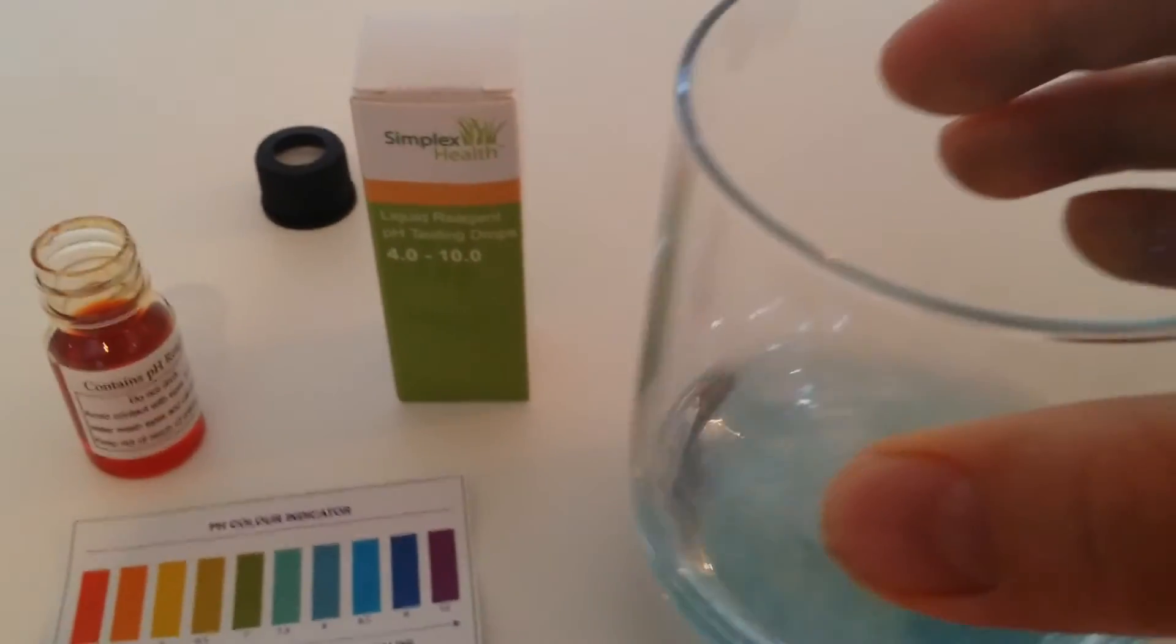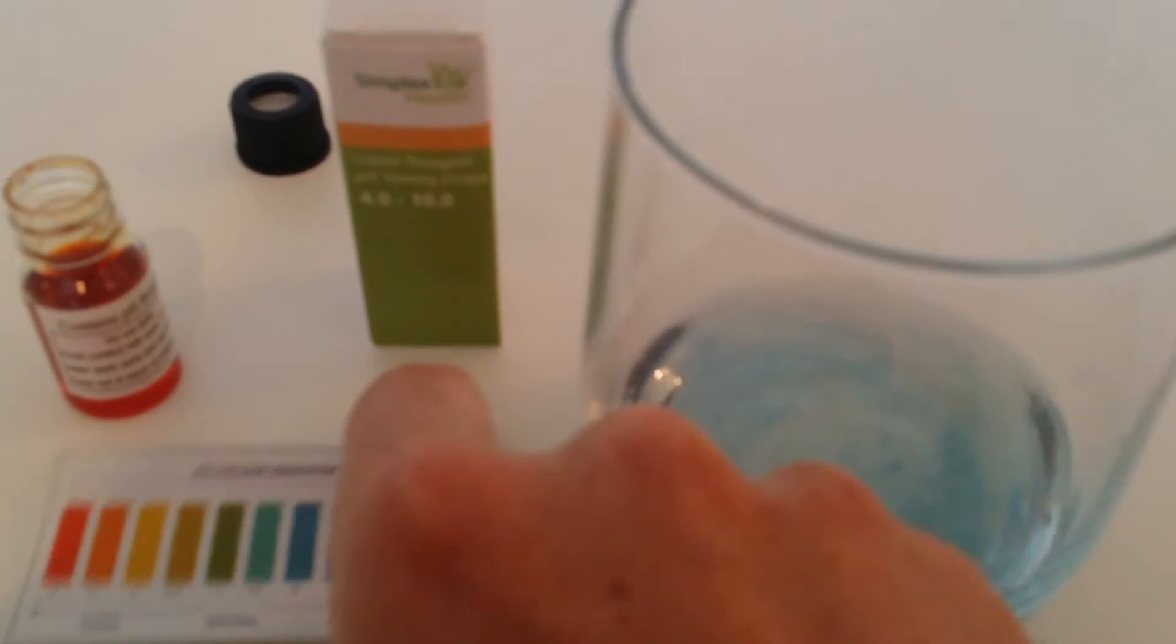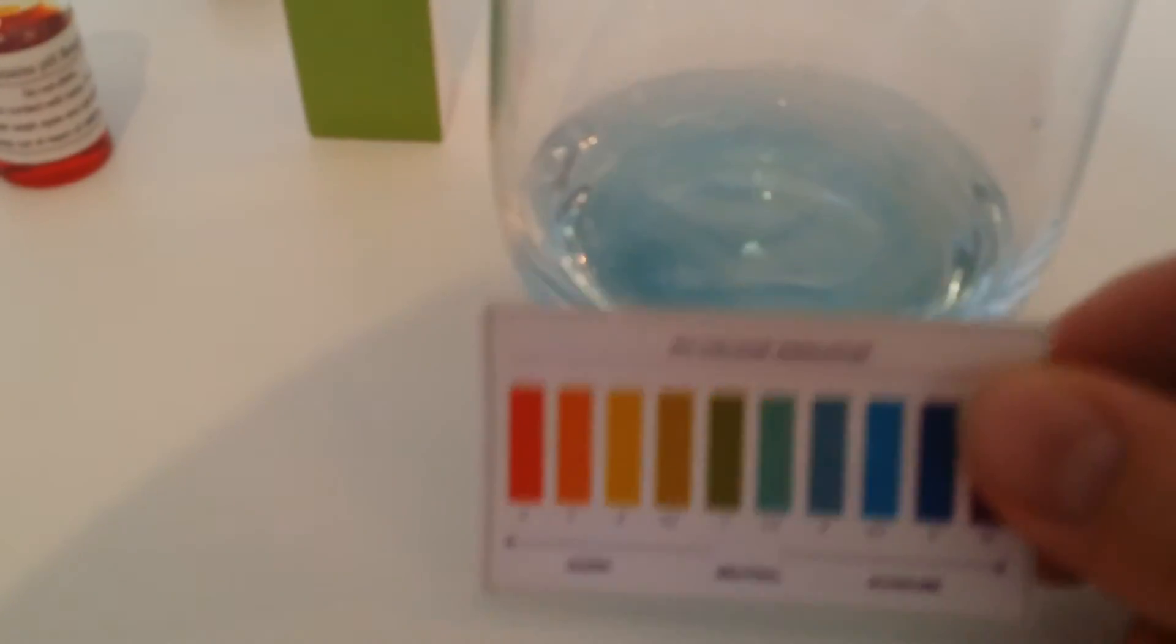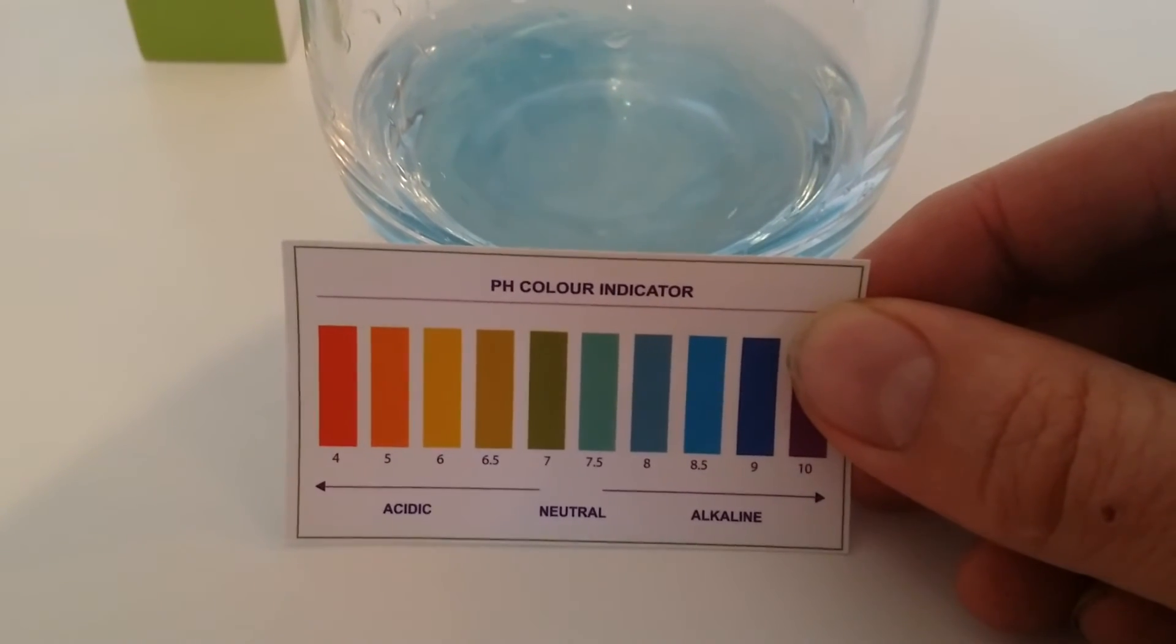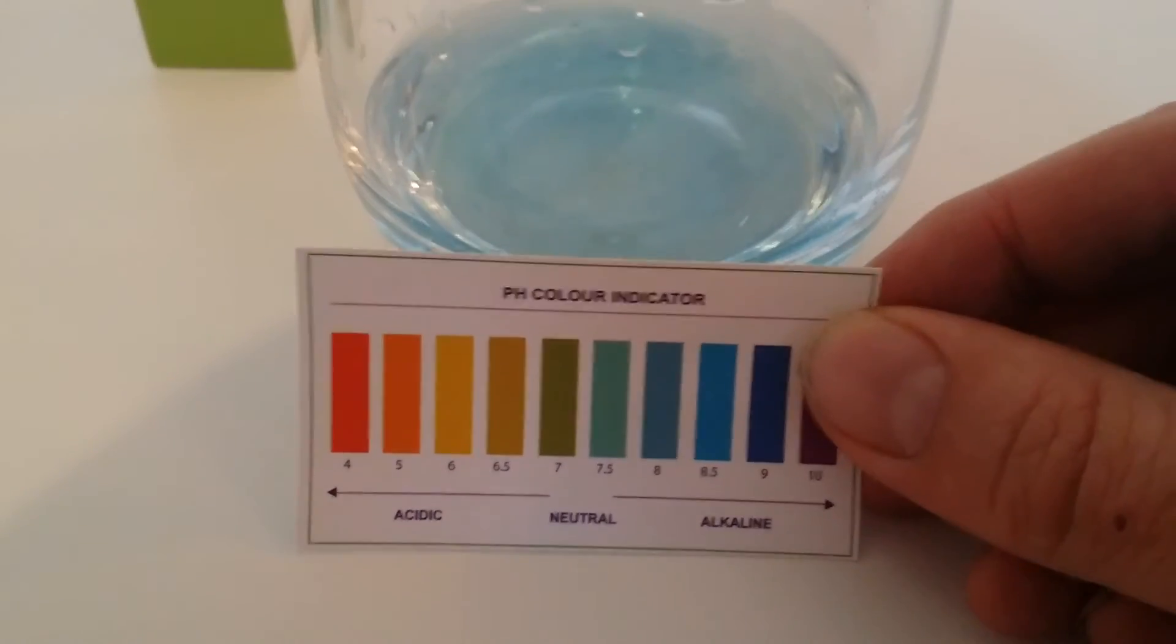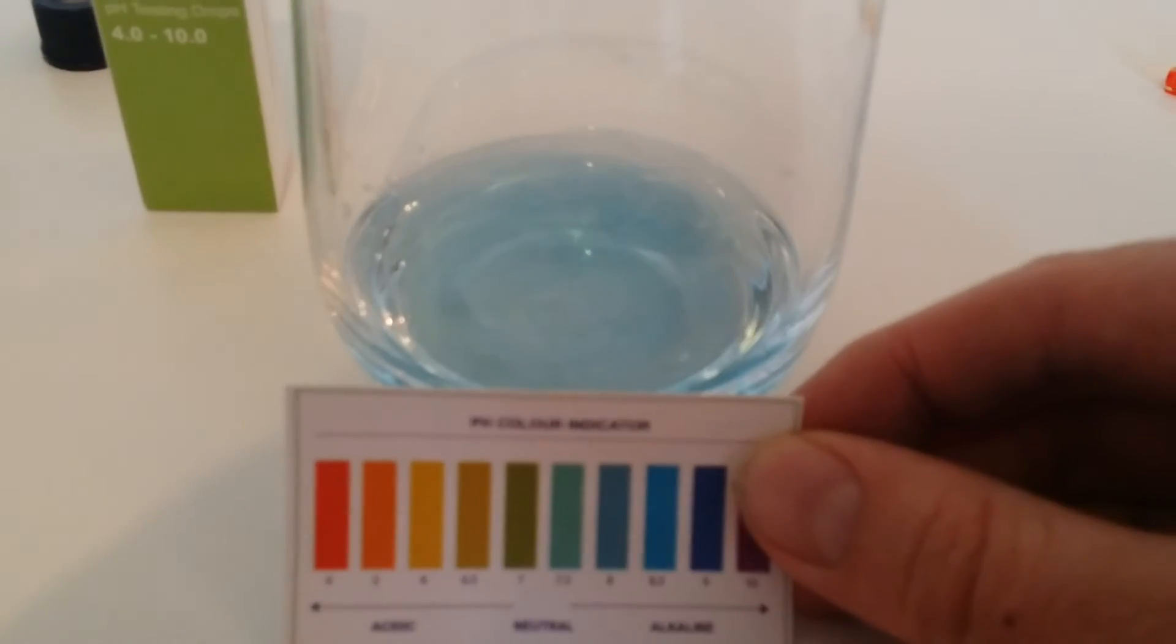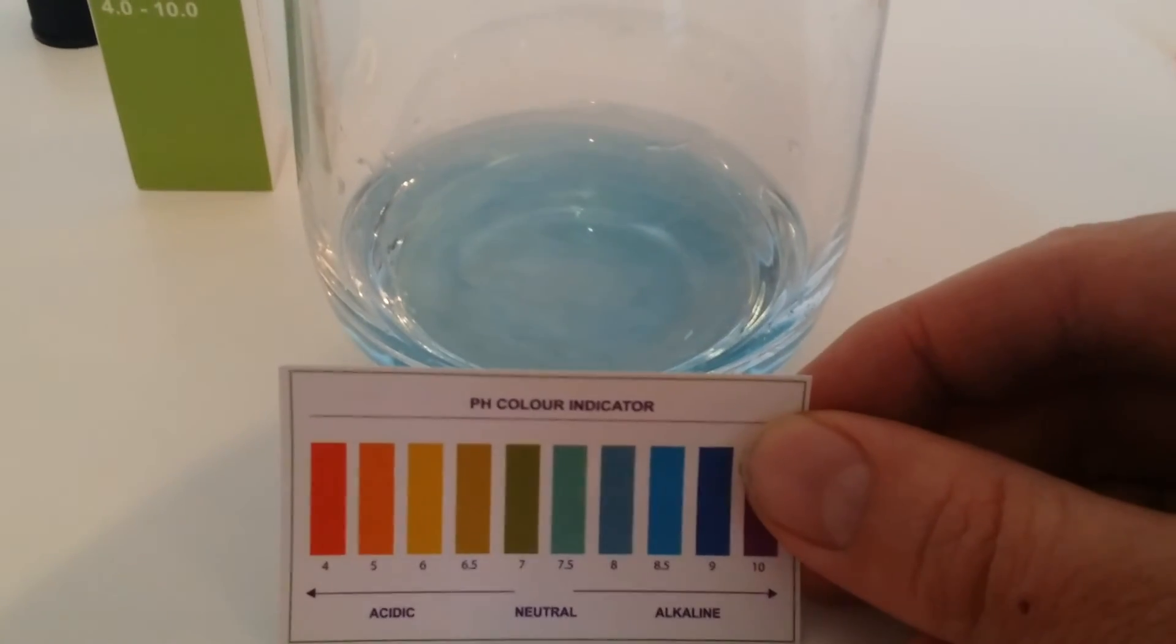Give it a little shake around, get the color chart, match it against there to get an idea what the pH is. If I'm looking at that I'd say the pH would be 7.5.